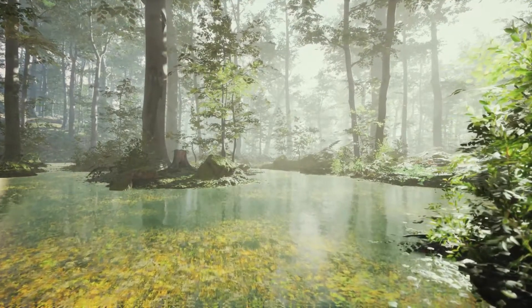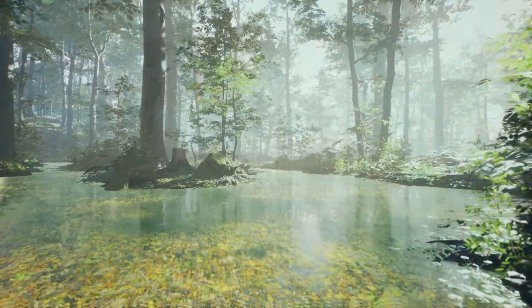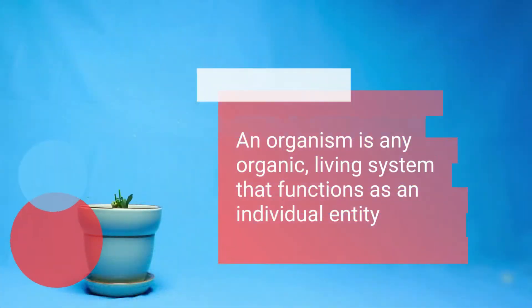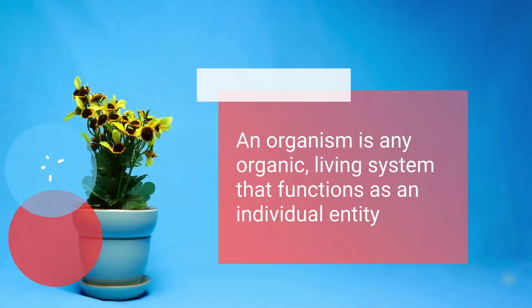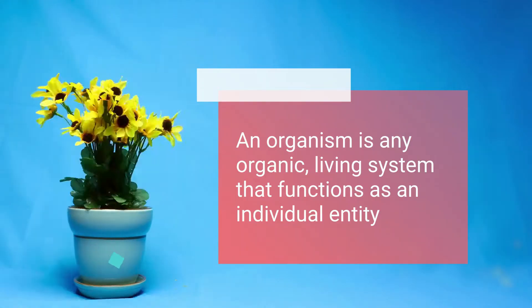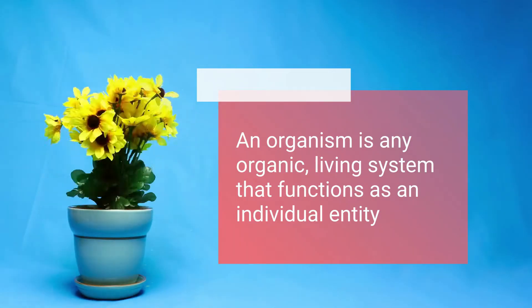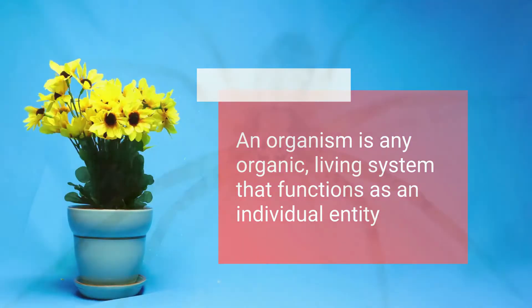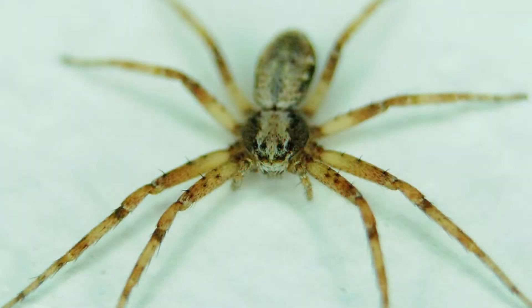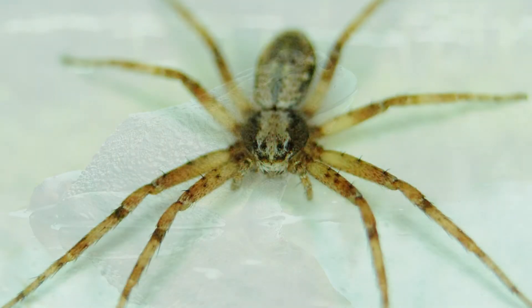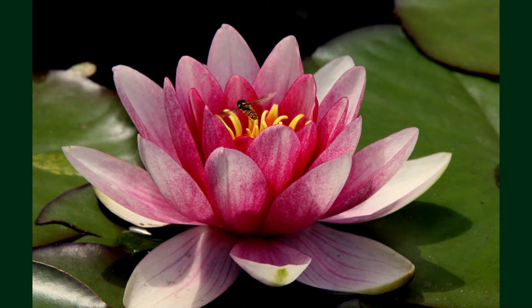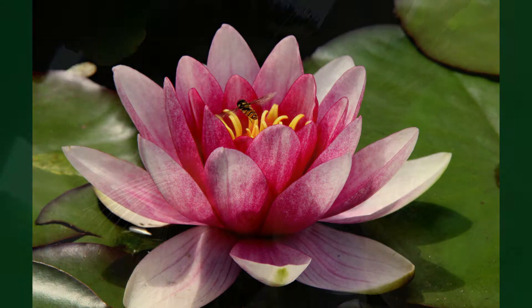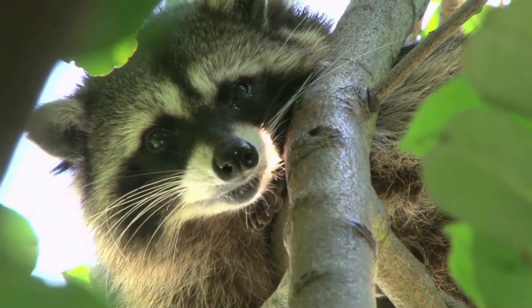An organism is any organic living system that functions as an individual entity. Examples within the swamp include a spider, a bullfrog, an individual water lily, or a raccoon.